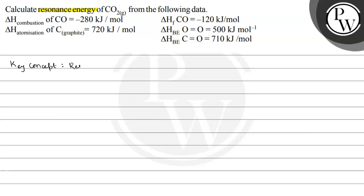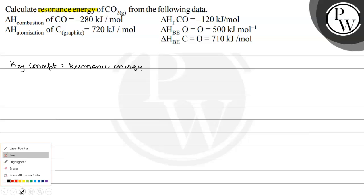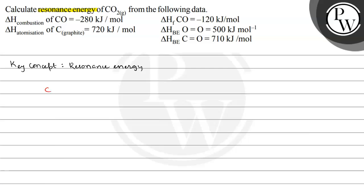The key concept here is resonance energy. Let us consider this reaction: carbon solid plus O₂ gas giving carbon dioxide gas. This is the formation reaction of carbon dioxide, so this enthalpy change delta RH will be equal to the formation enthalpy of carbon dioxide, which is what we are calculating — the theoretical value.